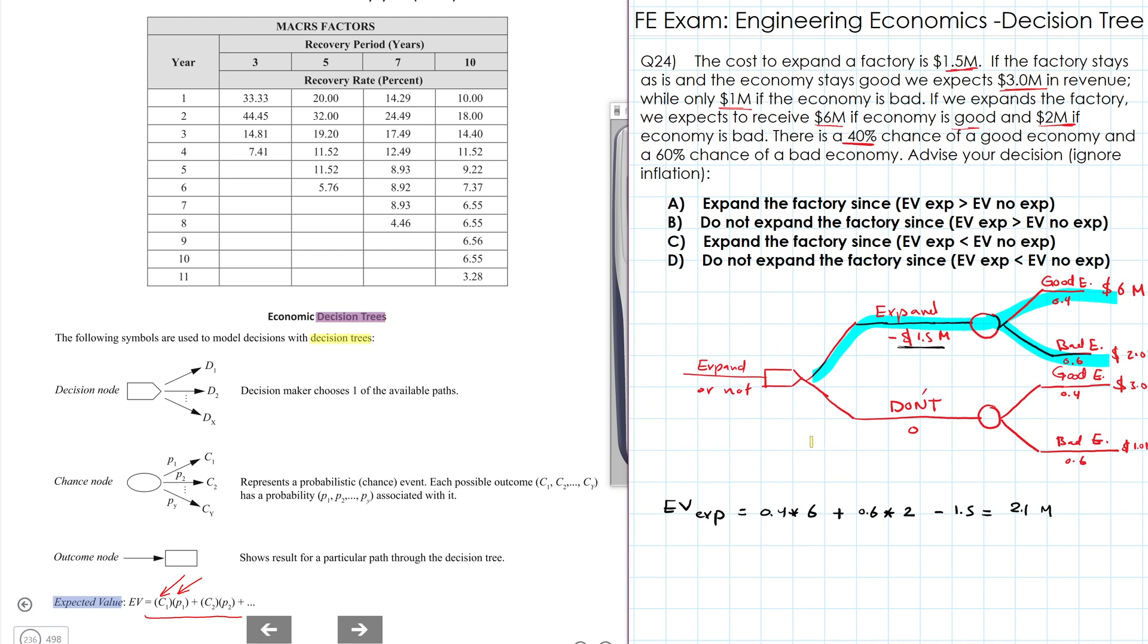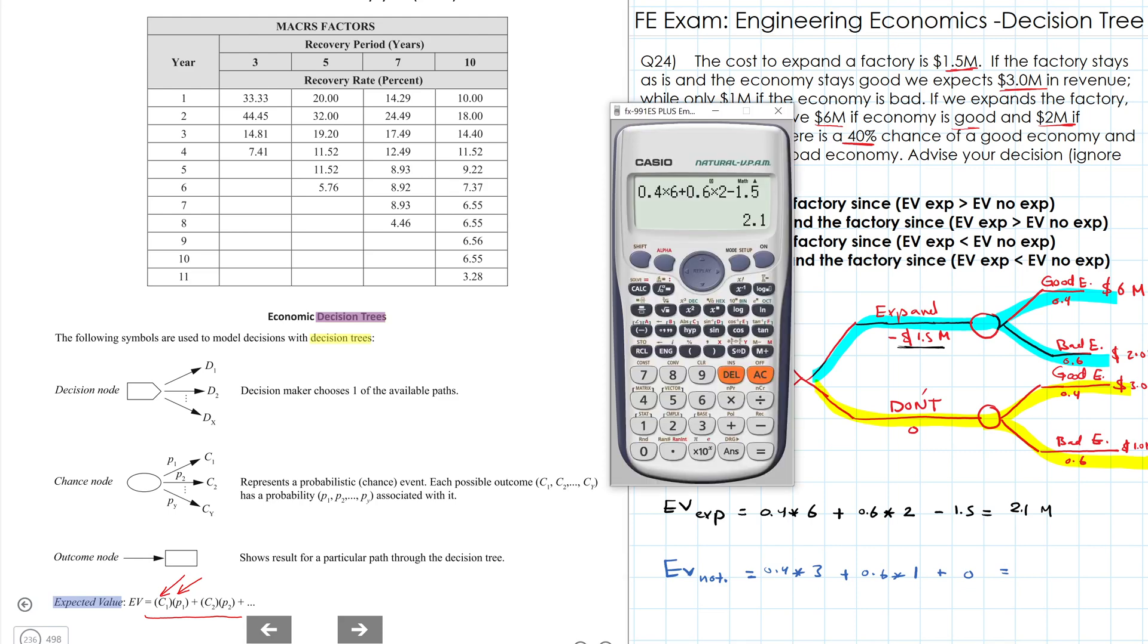Now the expected value for keeping the factory as is is similar in the process. It should be 0.4 multiplied by $3 million plus 0.6 multiplied by $1 million. And we have to note that there is no extra expenses to keep the factory as is. And that would be 1.8.